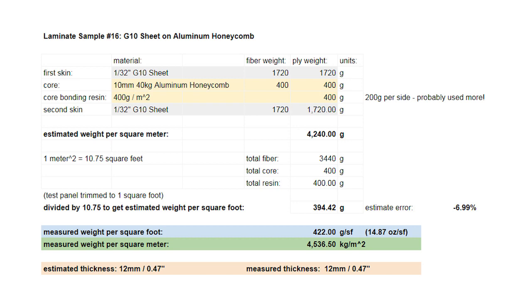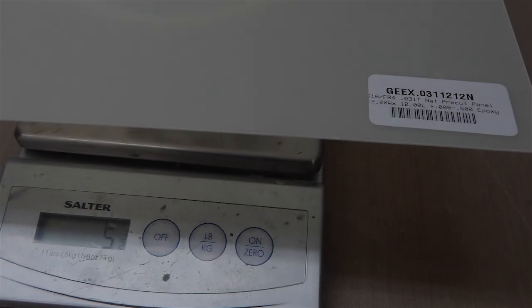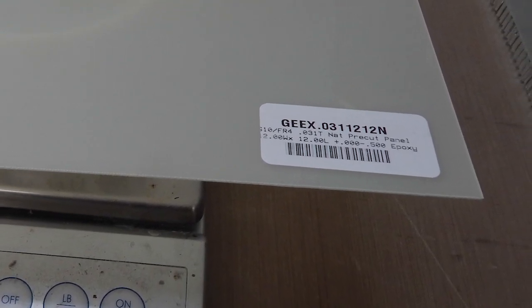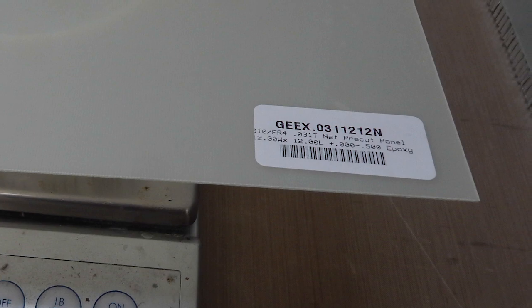You can glue sheets of stuff onto core and make things that are pretty useful and you can do it pretty easily. This one's just some G10 sheet, 1/32 inch thick, bonded onto some aluminum honeycomb core with 5-to-1 epoxy.